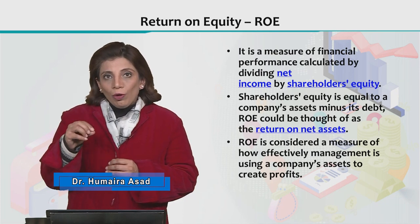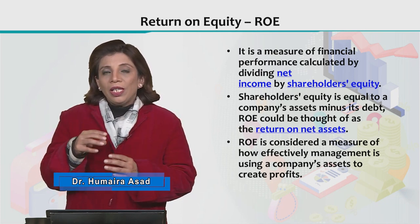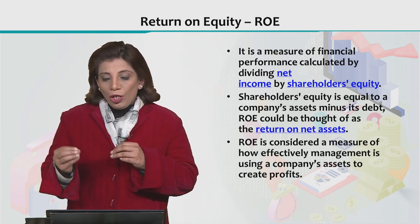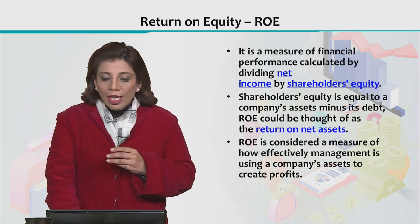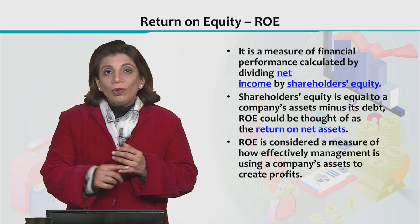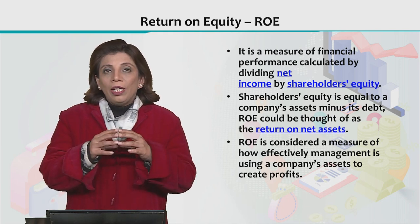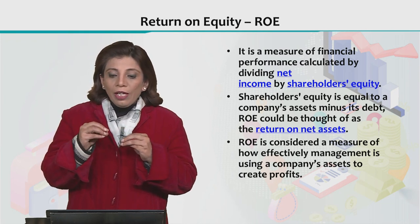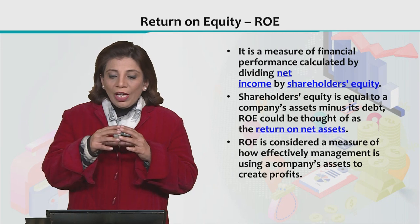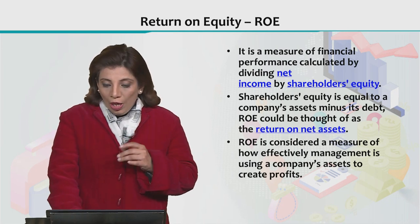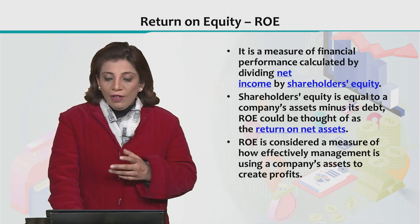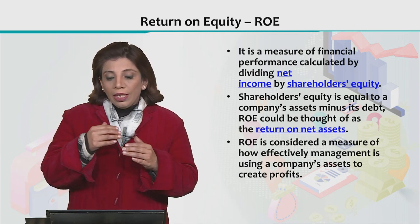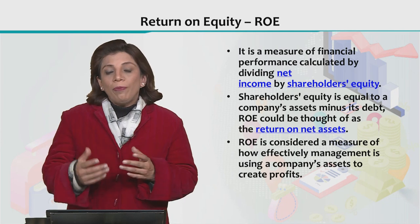When we look at the formula of ROE, it is obtained by dividing the net income value by the shareholder's equity. It is also considered the return on net assets, because when calculating the denominator value, you consider the debt as well, and that debt is subtracted from the overall value of the company's assets. ROE is a measure of how effectively management is utilizing the company's assets to create profits.